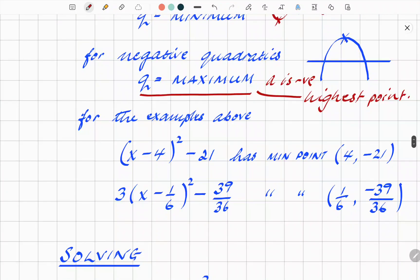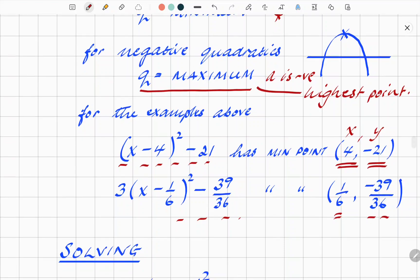And so for the examples above that we did, the first one, (x - 4)² - 21, has a minimum point at (4, -21). So that's your x, y coordinates. And for the second one, 3(x - 1/6)² - 39/36. Again, reverse the sign of the 1/6. So from minus, it becomes a positive. And the y value is -39/36.